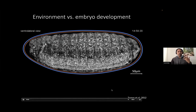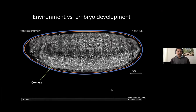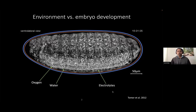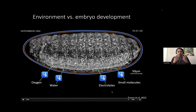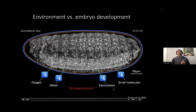The embryo also takes a few things from the environment — for example, it can breathe through these protective barriers, takes in oxygen, takes in a bit of water to maintain humidity, and maybe also electrolytes and small molecules. All of this is under the control of the embryo. What the embryo cannot control is, for example, temperature — that part of the environment. So that is the basic motivation for my question.